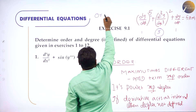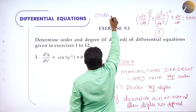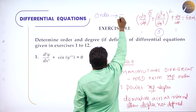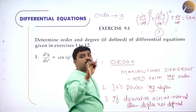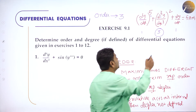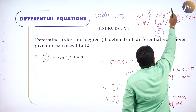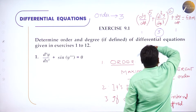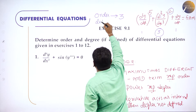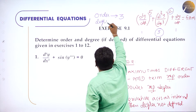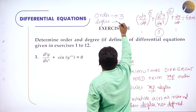What is the degree for that problem? Degree means the overall power of the highest-order derivative. The highest-order term is d³y/dx³, and its overall power is 2. So degree is 2.